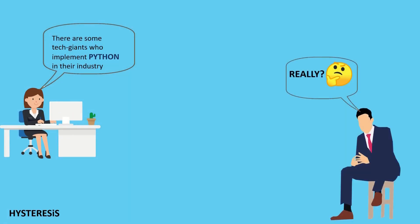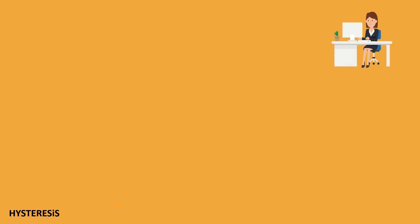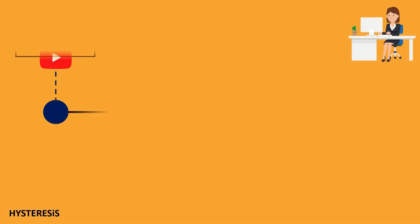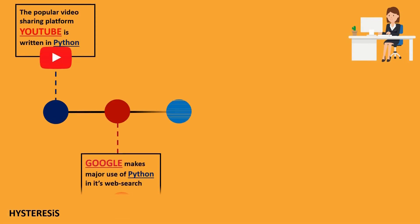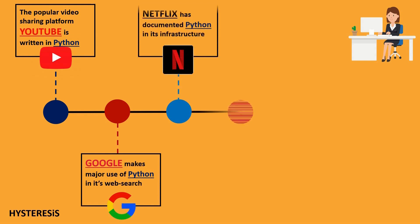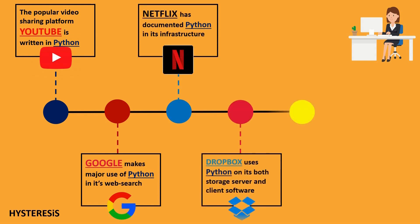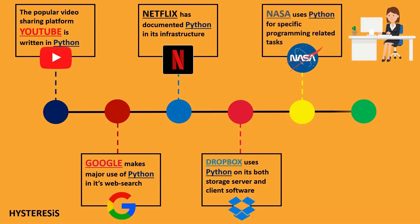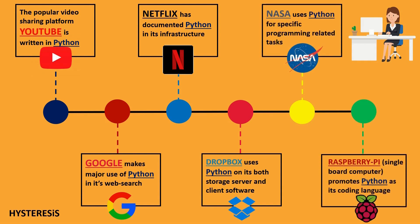I'll explain in detail why tech giants use Python instead of other programming languages. There are more than hundreds of programming languages — they can use any one, but why are they preferring Python nowadays? The popular video sharing platform YouTube is written in Python. Also, Google makes major use of Python in its web search — it crawls through millions of websites, matches your keywords, and gives you results in fractions of seconds.